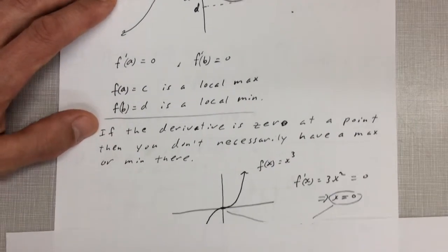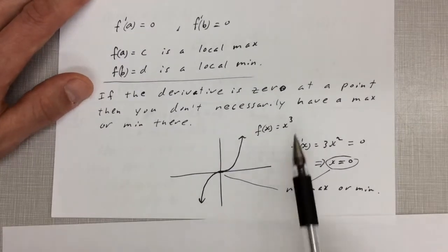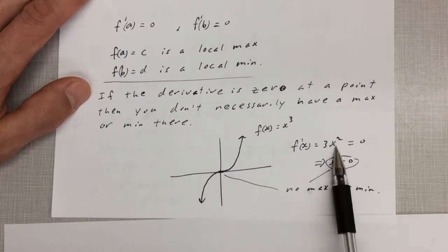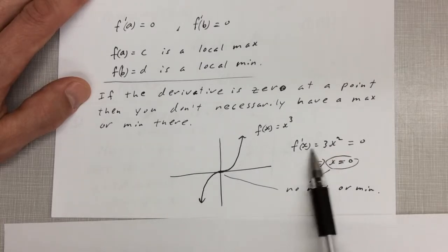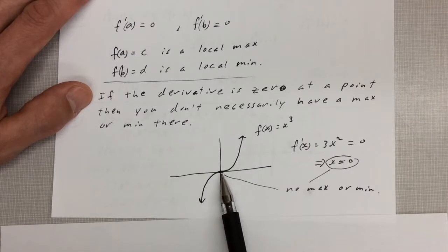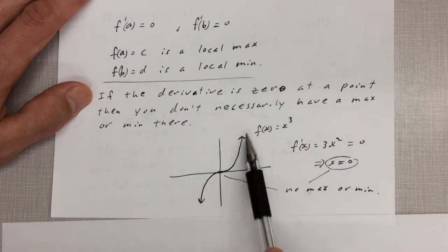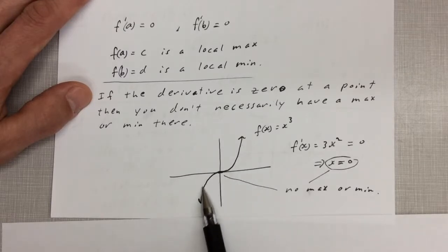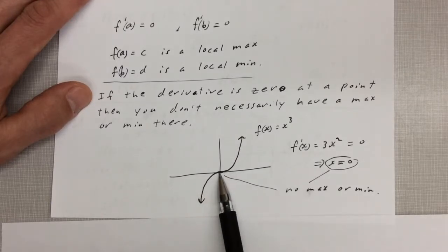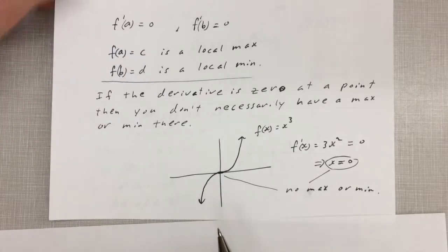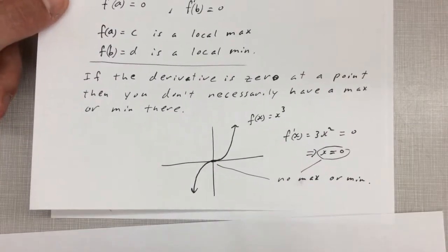Here's an example where the derivative is zero but there's no max or min. For f(x) = x³, the derivative is 3x², which equals zero at x = 0. At x = 0 the slope of the tangent is zero, but it's not a local max or min — it's called an inflection point. So there are cases where the derivative is zero and you don't have a max or min; we have to investigate further.